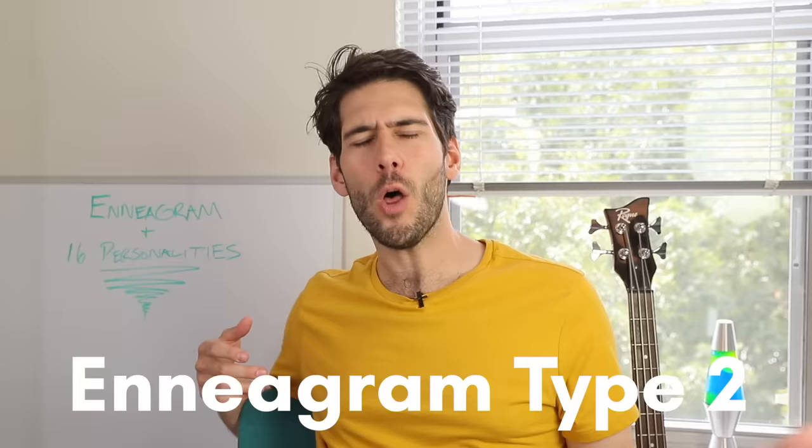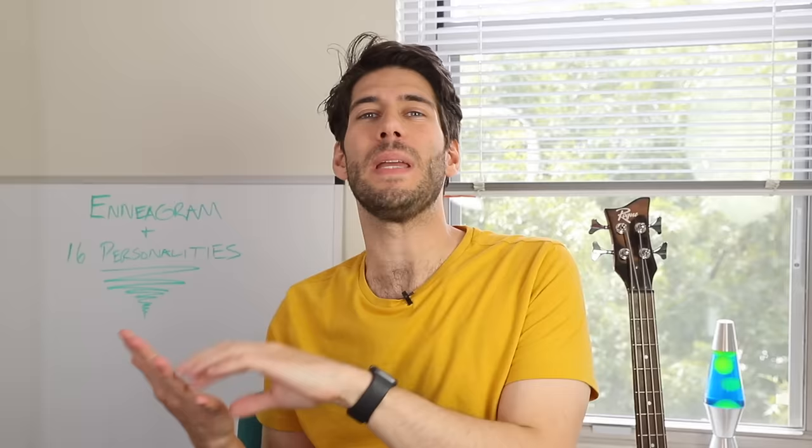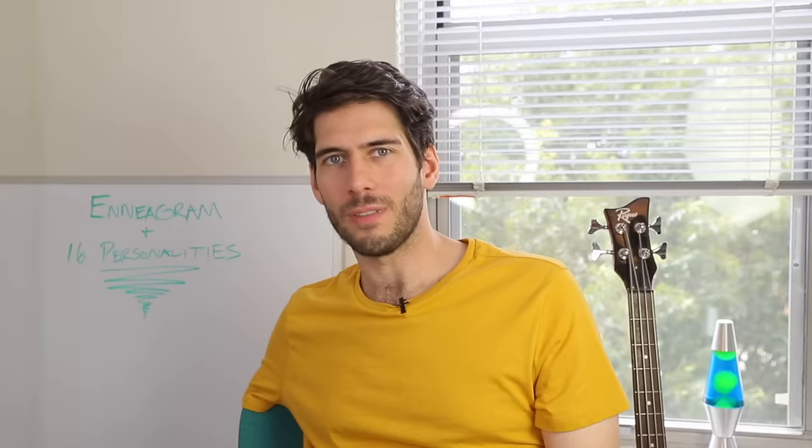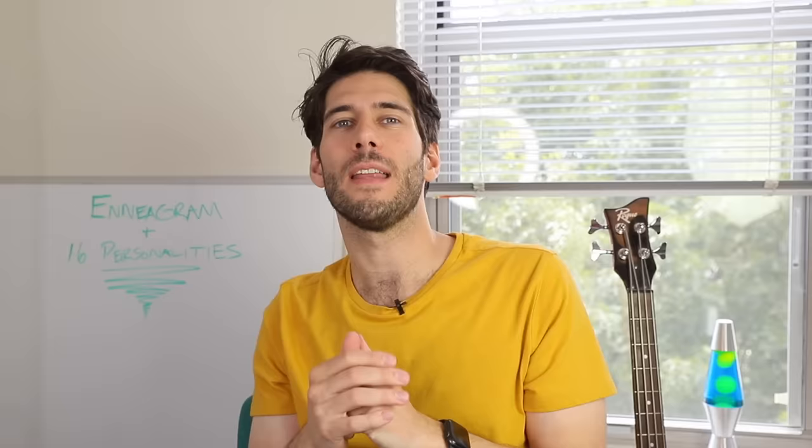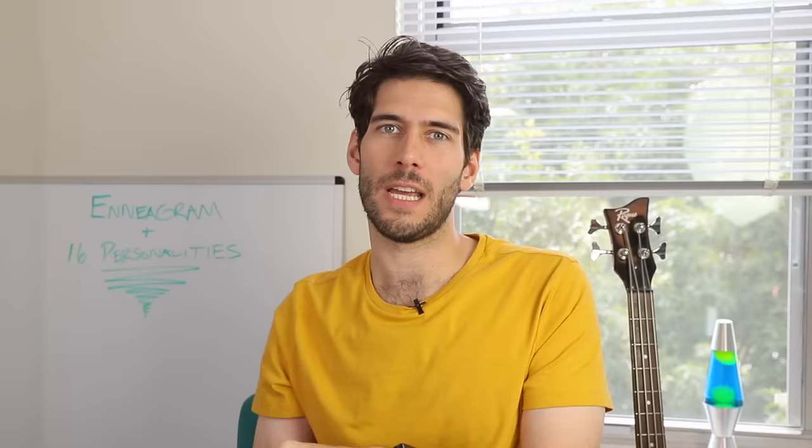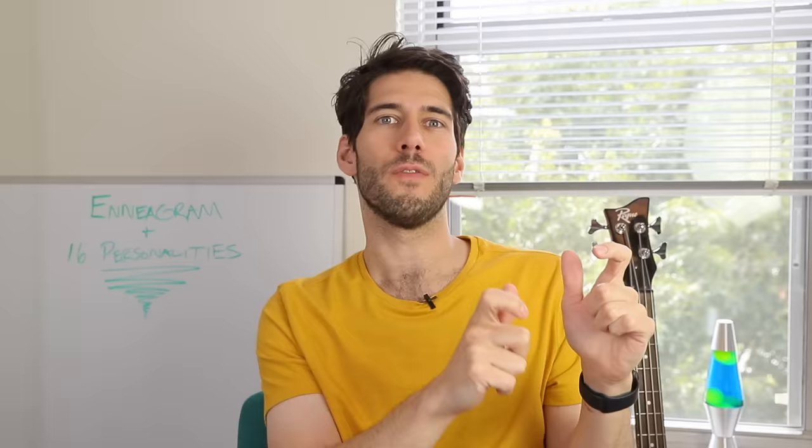Let's move on to type two on the Enneagram, which is called the helper. The helpers are warm, compassionate, giving. They want to be loved and want to express their feelings for others. They really crave validation from others — it's the kind of thing where they will do a lot of nice stuff, but secretly it's because they want other people to love them and say you're doing great. Which of the 16 personalities are most likely to be type twos? Clearly this is one of the more obvious ones. I think it's the FJ types, especially the ESFJ and ENFJ who have dominant extroverted feeling, because the description for the type two is basically the same as the description for extroverted feeling.